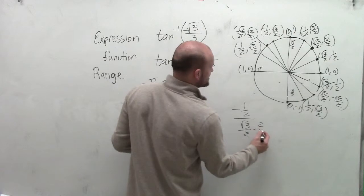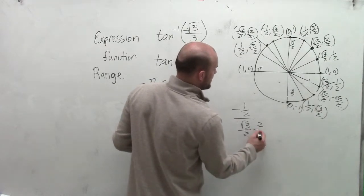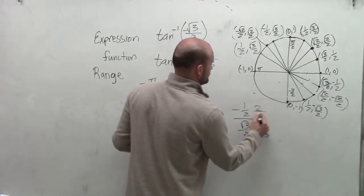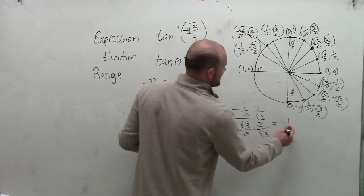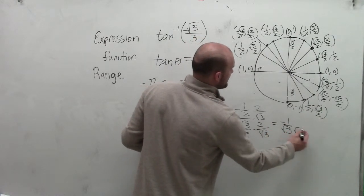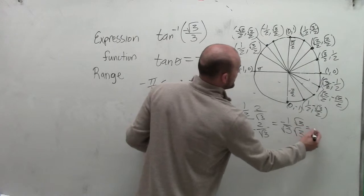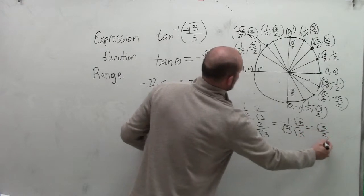As I multiply by my reciprocal, I end up getting a negative 1 square root of 3. And then as I rationalize that denominator, I get a negative square root of 3 over 3.